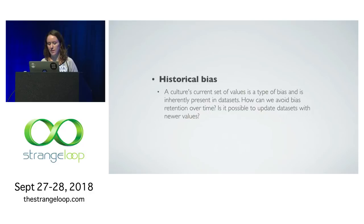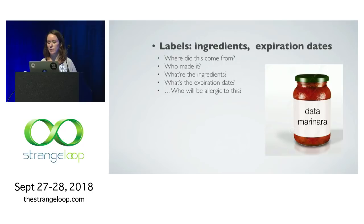Historical bias: I firmly believe that data sets basically capture a culture's values at any certain time. So how do we avoid that bias retention over time? Is it possible to update data sets? Which brings me to labels — where did this data come from? What are the ingredients in the data set? What should the expiration date of this data set be? And of course, who will be allergic to this? I think data sets should have labels like food has labels.